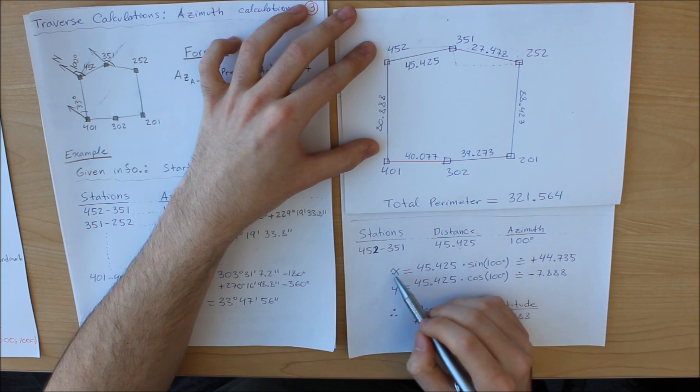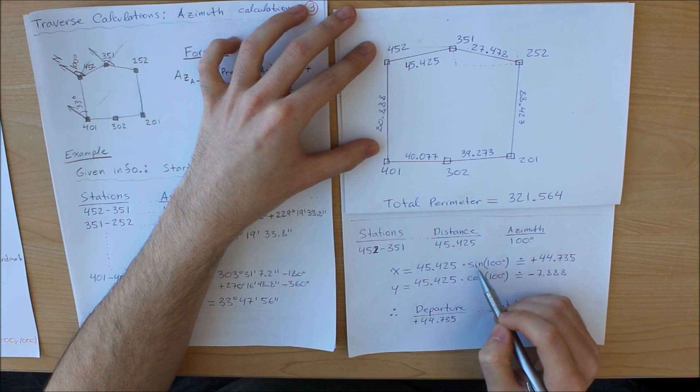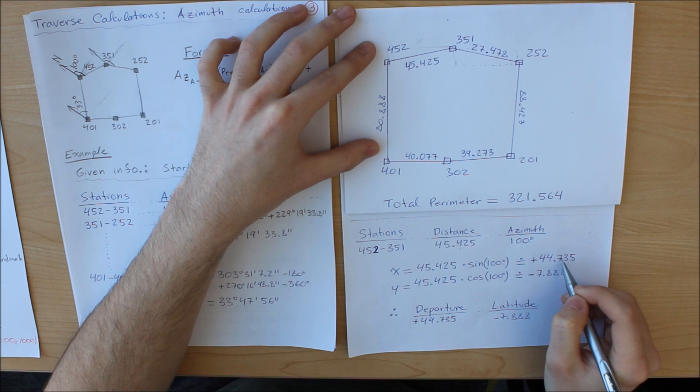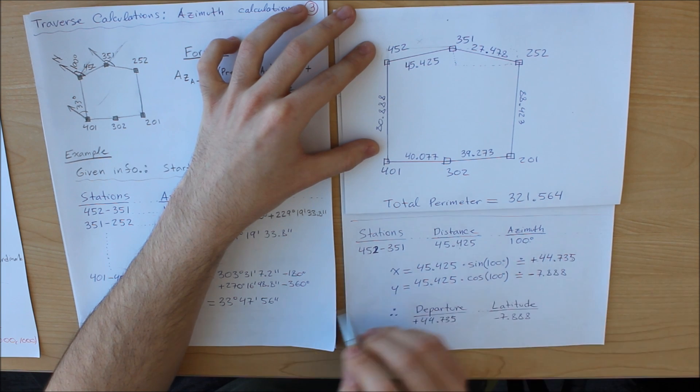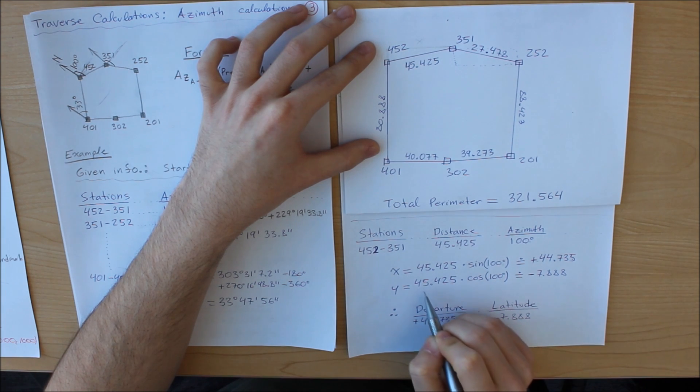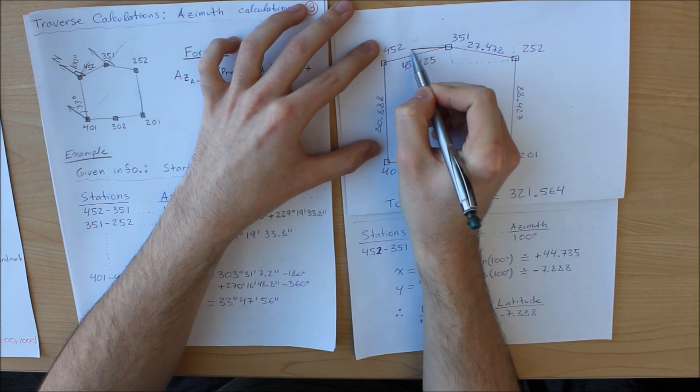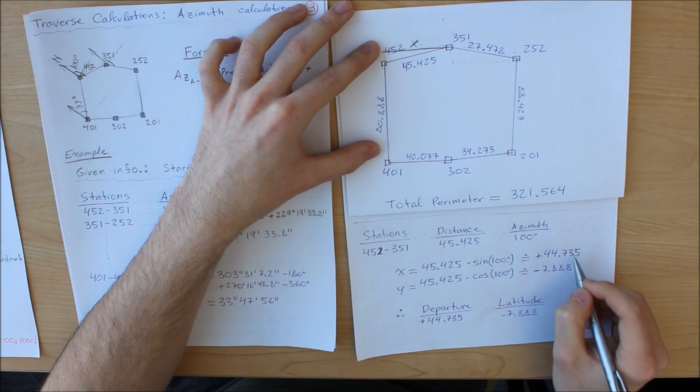So alrighty, so the x component is equivalent to 45.425 multiplied by sine of 100 and that is equivalent to approximately 44.735. Note the positive sign, that means this is going right. So what that means is this length right here, if we break this down into x and y, this is going to equal this number right here.